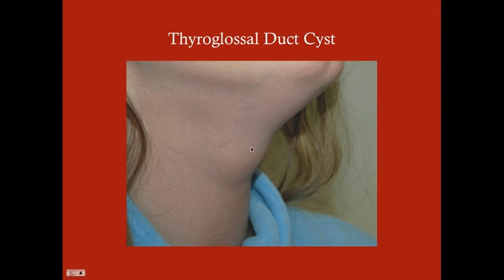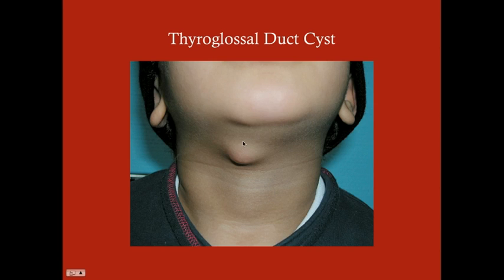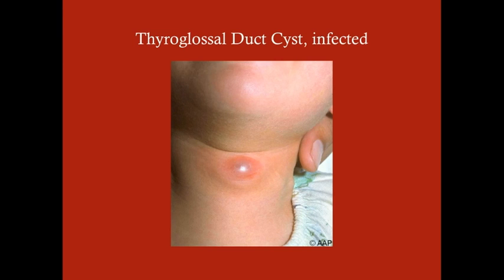Here is a thyroglossal duct cyst—it's roughly in the place you'd expect an Adam's apple, but it's not one because this is a young girl of about five or six years old. Here's another one, a bit off the midline, possibly with an abscess—it looks a little red. If infected, on palpation it may be warm, fluctuant, and tender, and the child might have some pain around the neck. This one is obviously infected.